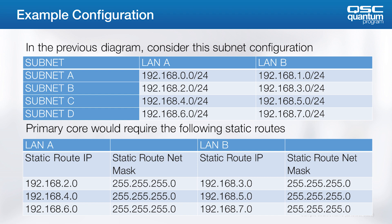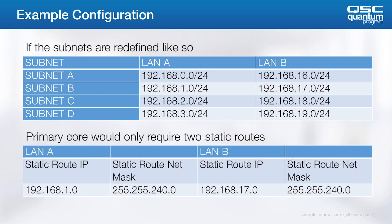The moral of the story is that all that work could be avoided by adjusting the way device IP addresses were configured. A static route can be defined to reach a range of subnets rather than just one, following the same rules as standard subnetting. For example, the subnet 192.168.0.1 with net mask 255.255.255.240 has a host range from 192.168.0.0 through 192.168.0.15, allowing a single static route definition to cover all subnets from 192.168.1.0 to 192.168.1.15.